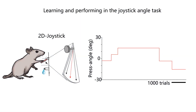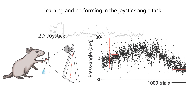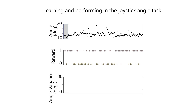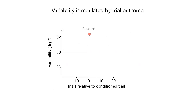Zooming in now, we can see how individual trials were either rewarded or not. We're interested in understanding the relationship between performance and motor variability, measured as the variance across a moving five-trial window. To simplify the analysis and to reveal a causal relationship between trial outcome and variability, we introduced probabilistic reward trials, where the reward was uncoupled from the rat's movement angle and delivered probabilistically. This allowed us to analyze how the outcome of a single trial affects variability.